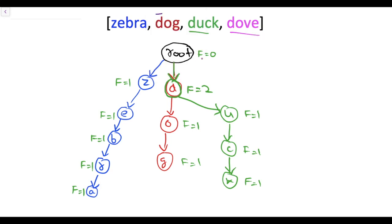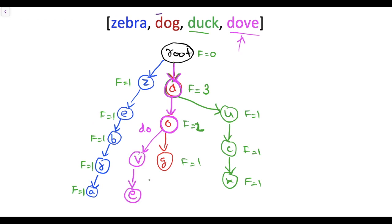Now we add 'dove': root has D, so we move down to D and increase its frequency to 3. We move to O; another string also has DO as a prefix, so the frequency of O becomes 2. We then add V with frequency 1, then E. The frequency at vertex V is 1 for the prefix DOV.